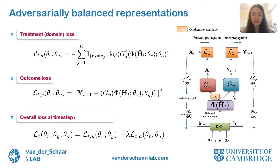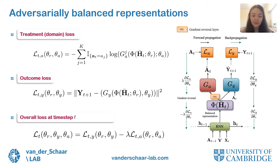We use this idea to obtain an adversarial framework that involves building a representation which achieves maximum error on a domain classifier and minimum error on an outcome predictor. We train a treatment classifier using cross-entropy loss to predict the treatment at time step t based on the patient representation, and also train a predictor network using mean squared error to estimate the outcome given the patient history and treatment A_T. To build treatment-invariant representations and estimate patient outcomes, we maximize the treatment loss and minimize the outcome loss. The hyperparameter lambda controls this trade-off between domain discrimination and outcome prediction, and we use an exponentially increasing schedule for lambda during training.